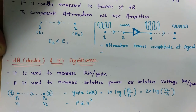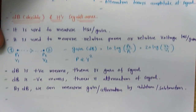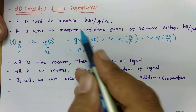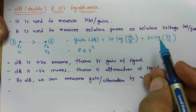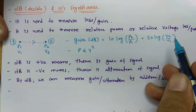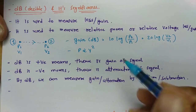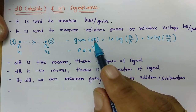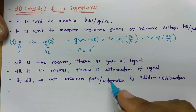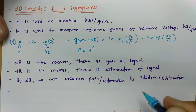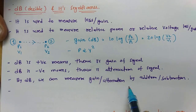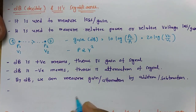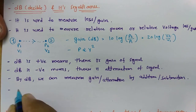This is how we measure relative power or relative voltage in terms of dB, which is used to measure loss or gain. Now, how do we identify whether loss or gain is happening? If the dB calculation is positive, there is a gain of signal. If the dB calculation is negative, there is attenuation or loss of signal. Using dB, we can measure gain or attenuation by simple addition or subtraction along the propagation path. Let me give an example to make this clearer.